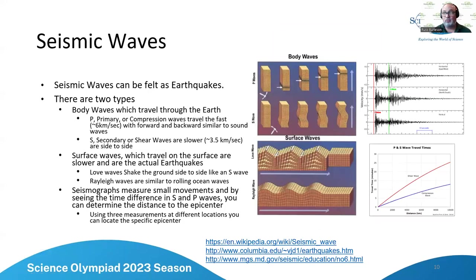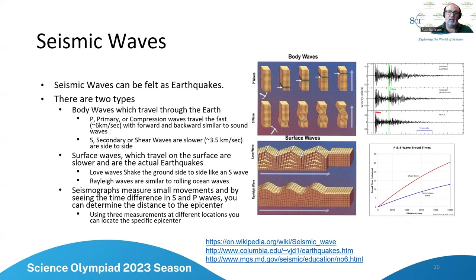Seismic waves are what we feel as earthquakes. There are different types: body waves go through the Earth. When thinking about body waves, think about P and S curves. P waves — primary or compression waves — are very much like a sound wave traveling through the Earth.